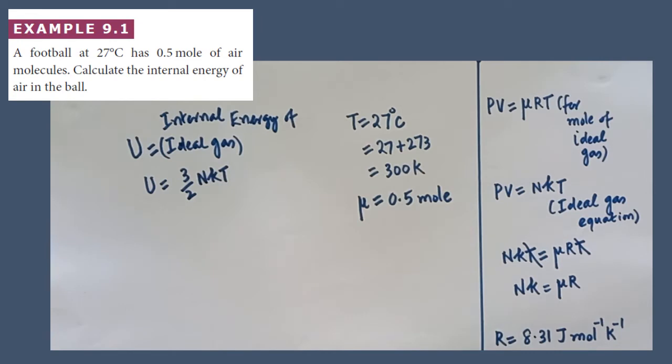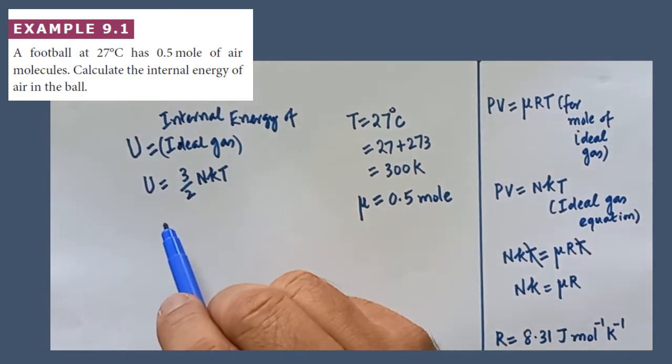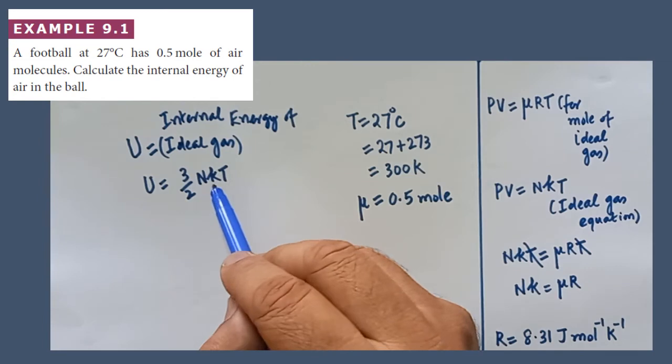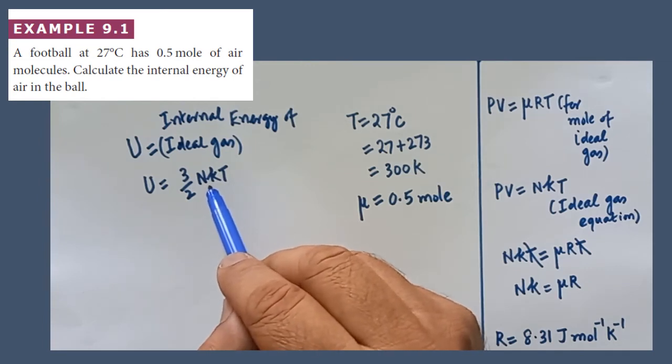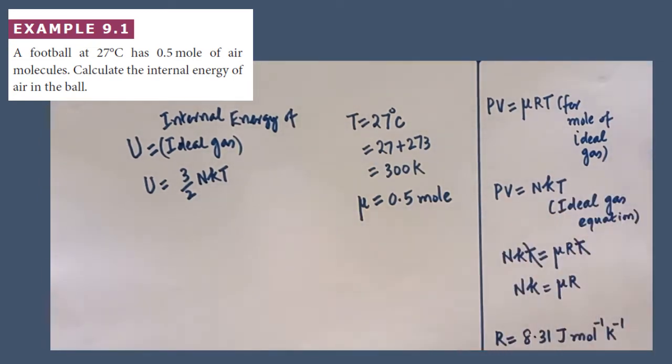Here, this is the number of molecule. It is given in terms of moles. Therefore, this formula cannot be used. This one must be rewritten in some other form. If the value is clear, the number of air molecule if it is given in terms of moles,